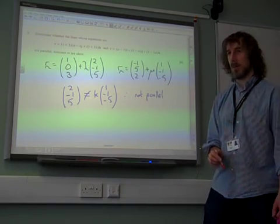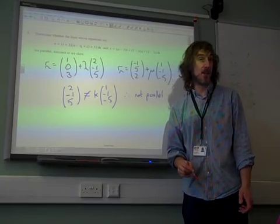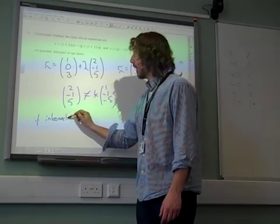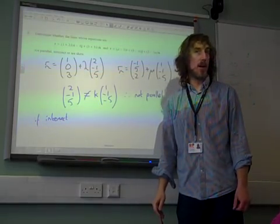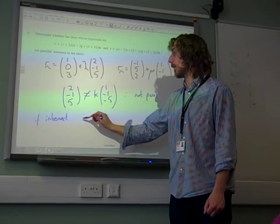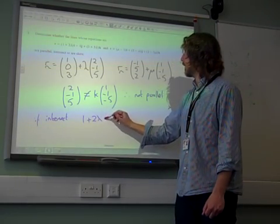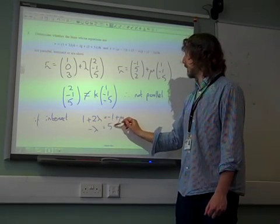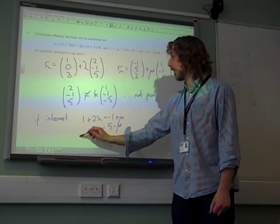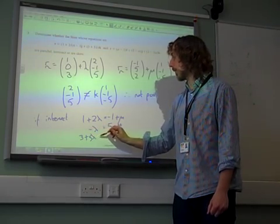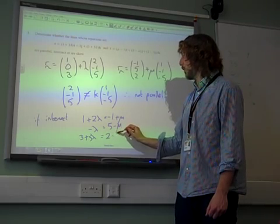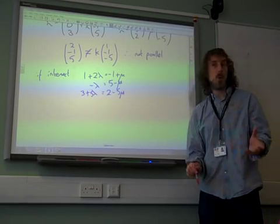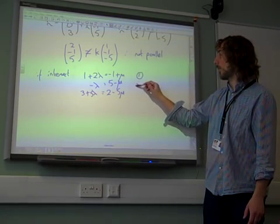Great. So, we now need to assess whether they actually intersect or not. So, if they intersect, then we can set up our three equations, our i, j, and k equations. So, we'd have 1 plus 2 lambda is minus 1 plus mu. We'd have minus lambda is 5 minus mu. And 3 plus 5 lambda is 2 minus 5 mu. So, we've got to work with these equations. Let's call them equations 1, 2, and 3.